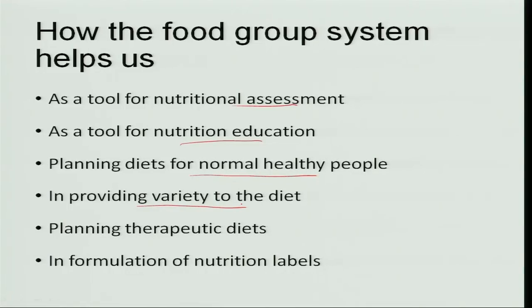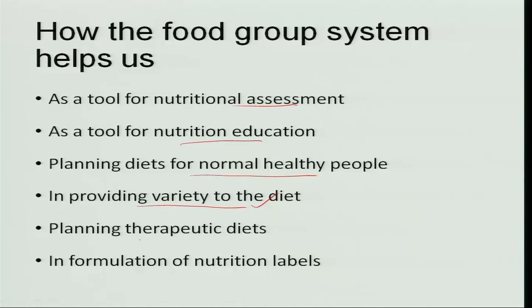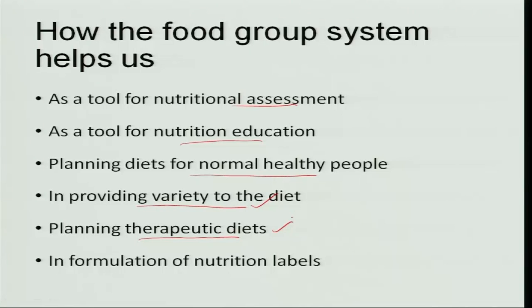The food group system helps provide variety to the diet — each food group has many varieties of foods, so every day you can change the cereal, change the pulse, or select different fruits and vegetables. It also helps in planning therapeutic diets: for example, for constipation or diarrhea, you can select what type of fruit, vegetable, or cereal to take and which food to avoid. Furthermore, it is used in the formulation of nutrition labels by calculating the nutrients in the foods that have gone into a product.